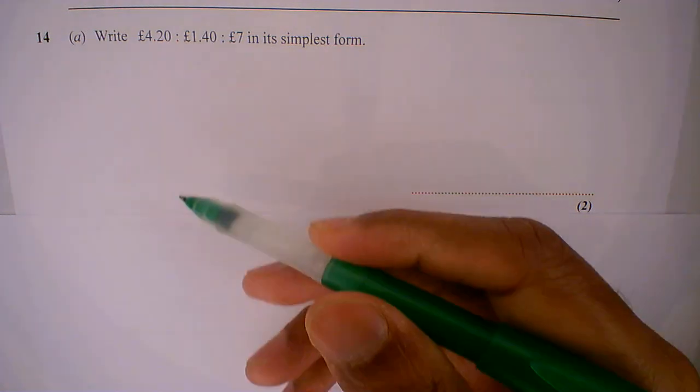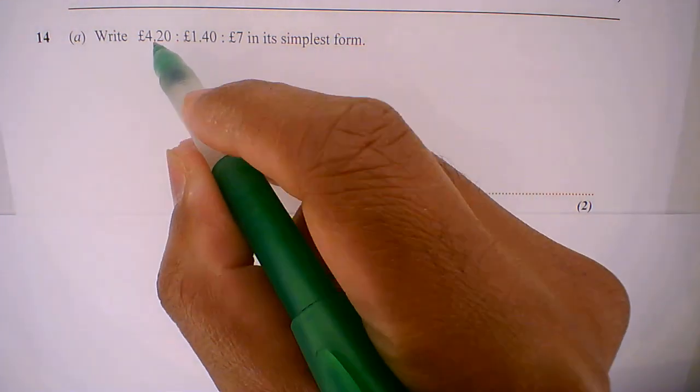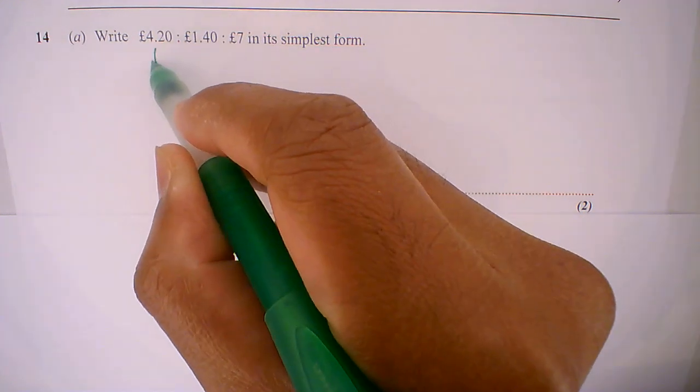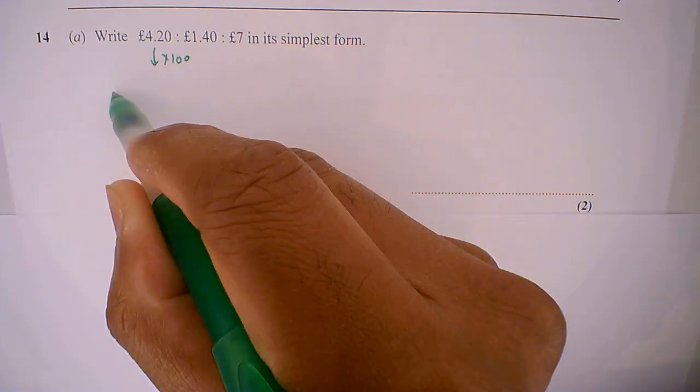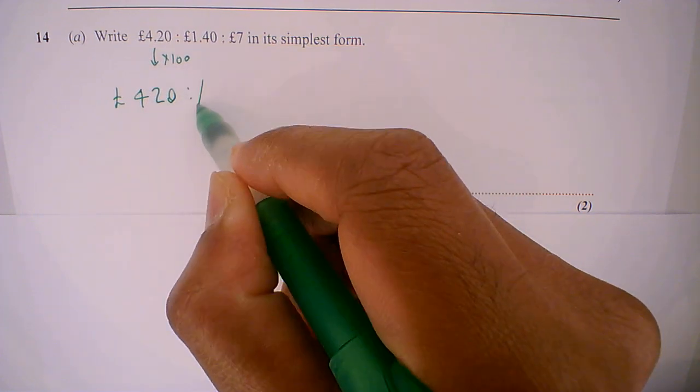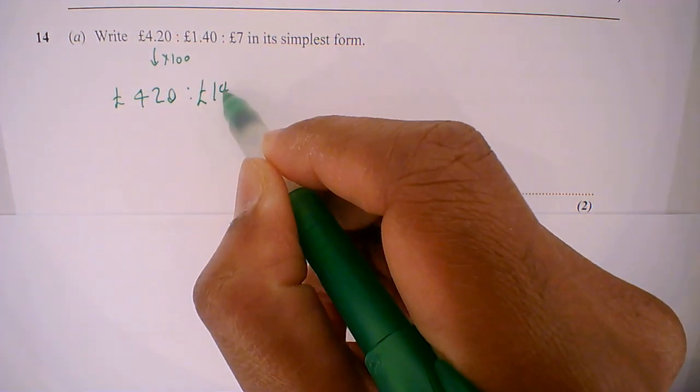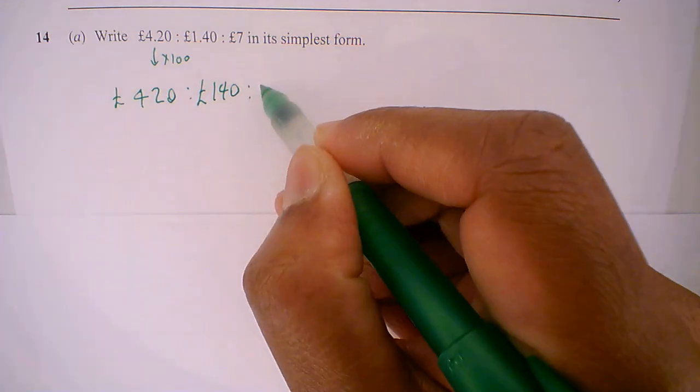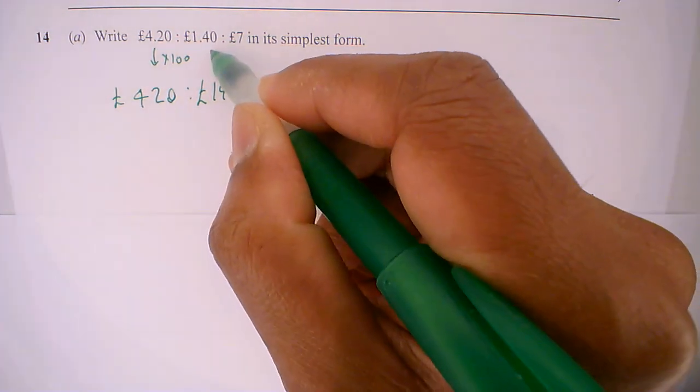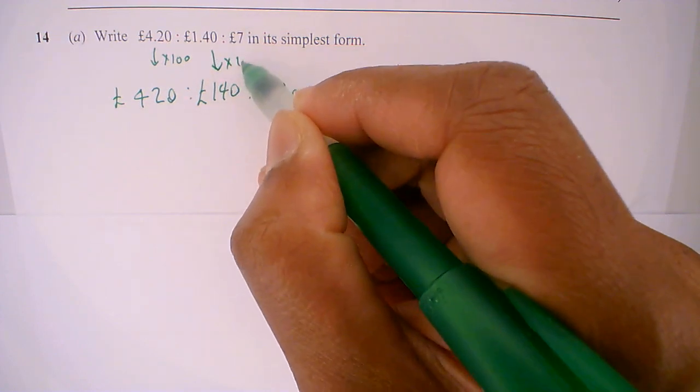So first of all, let's change this to a whole number. If I multiply this by 100, this can become 420, the next one becomes 140, and then the next one becomes 700. We are multiplying them all by 100.